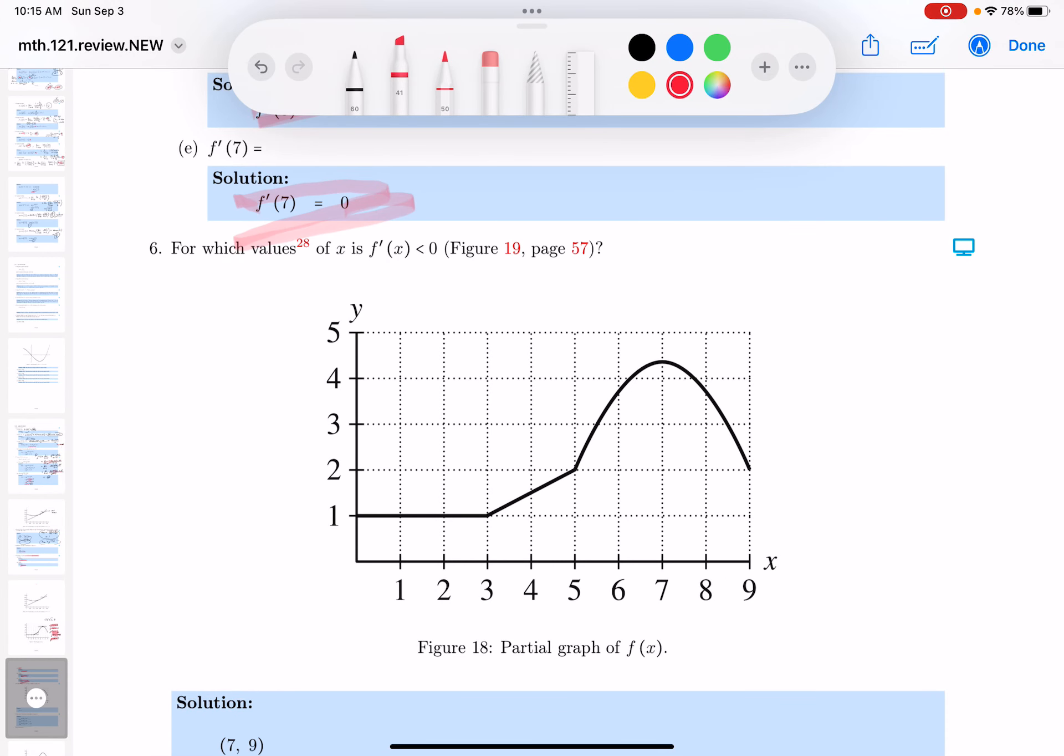Okay, number six asks for what values of x is the derivative negative. Looking at it, it may take some time to think about this, but the slope along here for all the derivatives is going to be zero.